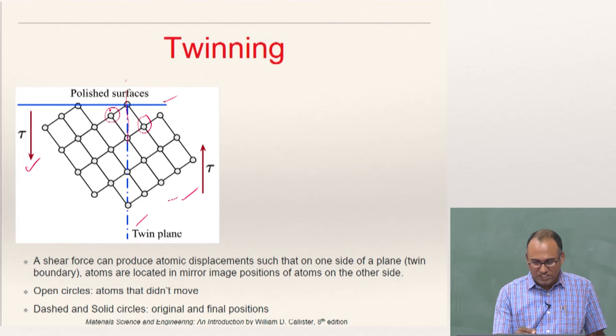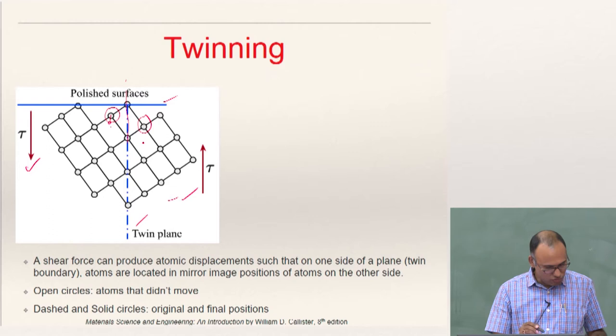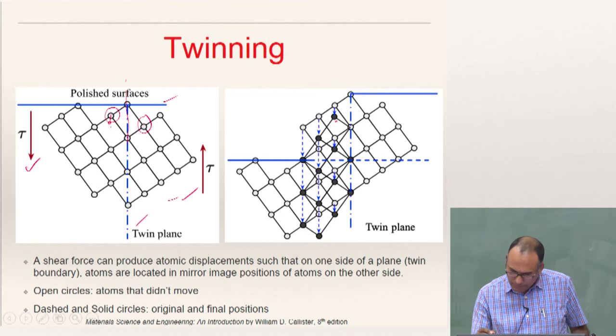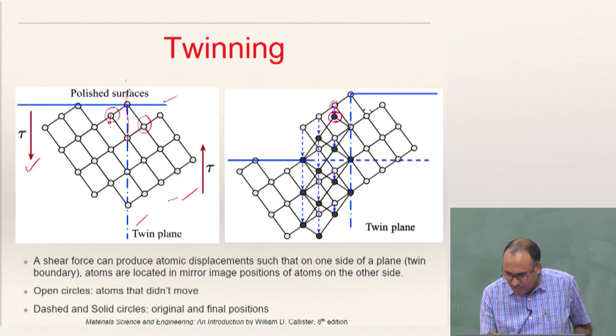For instance, this atom should move in such a way that it becomes the mirror image of the neighboring atom, and so on. The dark circles now show the deformed configuration of the same system. You can see that this atom is here and that is a mirror image of that atom about the slip plane. This atom has similarly moved here and became the mirror image of that atom, and so on.